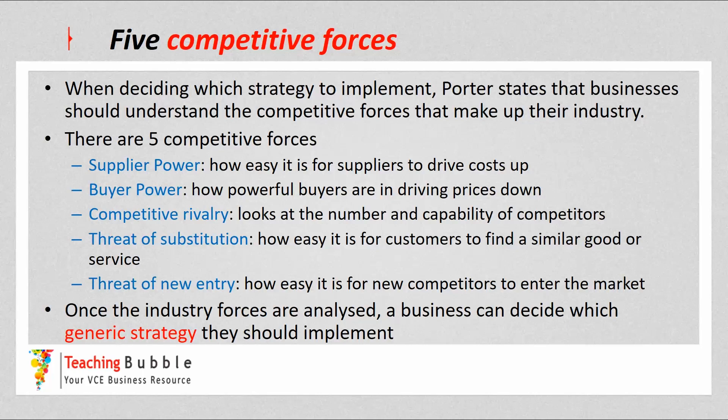Buyer power is the second competitive force — how powerful the buyers or customers are in driving the price down. The third is competitive rivalry, which looks at not only the number of competitors but also their capability — how powerful or strong other competitors are within the particular industry.